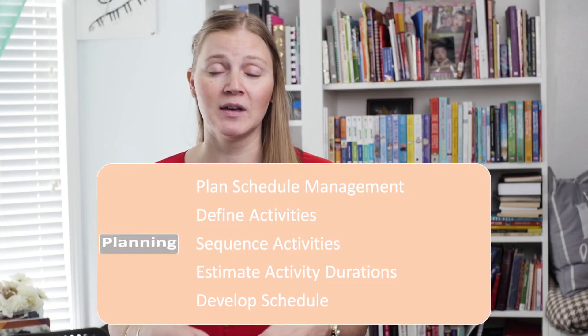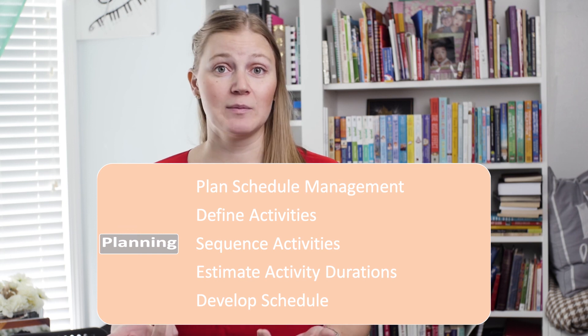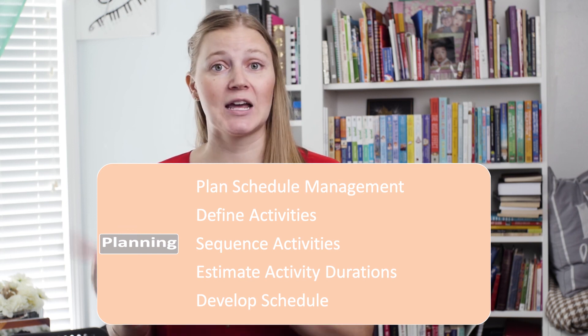The first process is plan schedule management. As you can imagine, the main output is the schedule management plan. Again, the schedule isn't in this plan. This plan is setting out how we will determine what the schedule should be. The next four processes in planning get us to the final process of developing the schedule, but we need to go in order here.